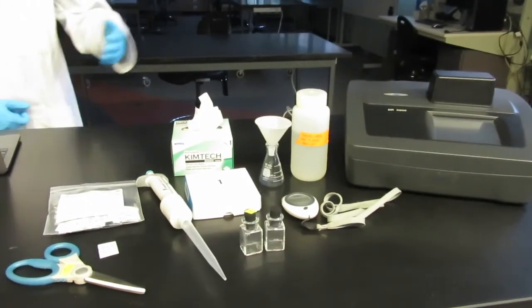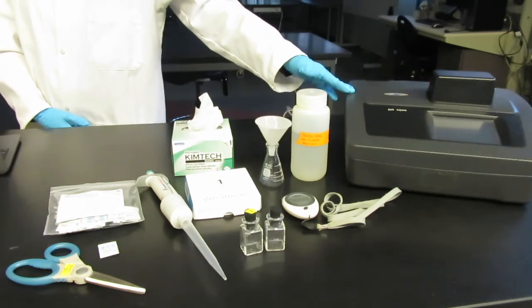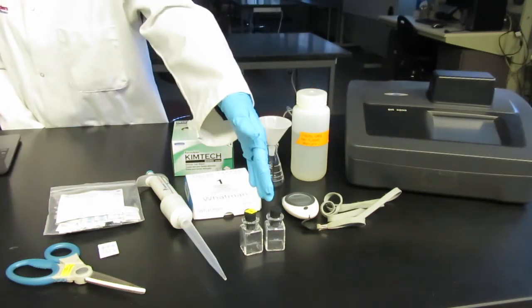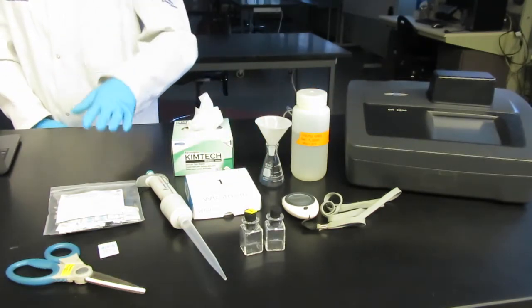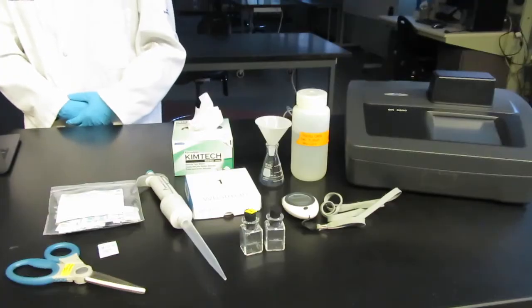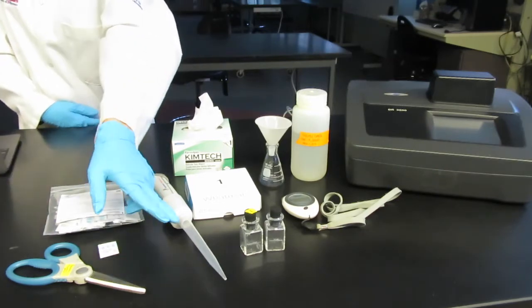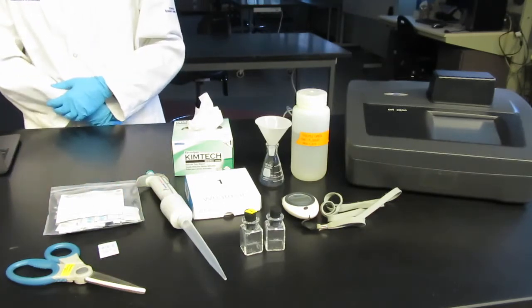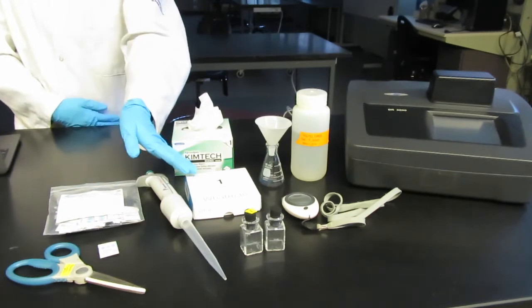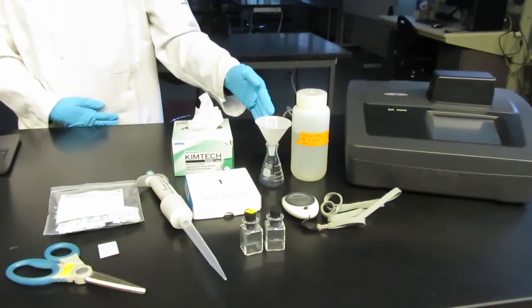On the bench top you will see the spectrophotometer where we select our method, the cuvettes and labeled rubber stoppers, chemical reagents—these are powder pillows along with a pair of scissors, a pipette and appropriate volume tips, Whatman filter paper grade one to filter our sample, and a funnel and flask to hold our filtered sample.